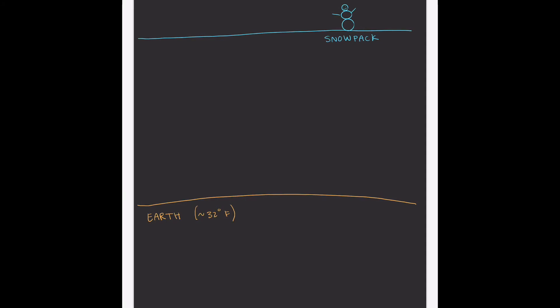And furthermore, because 32 degrees Fahrenheit is relatively warm compared to most wintertime temperatures, you're going to find a lot of water vapor right at the base of the snowpack, especially relative to the rest of the snowpack.